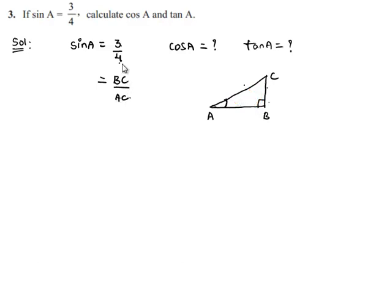Therefore, we can write BC as 3 and hypotenuse AC as 4. In order to find the values of cosA and tanA, we also need the adjacent side of angle A, which is nothing but AB.